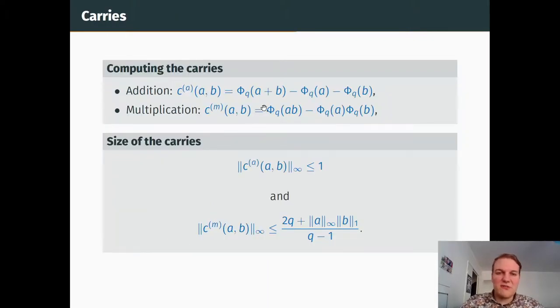Actually, the main difference between operations for polynomials and operations for integers with our way to view things is the presence or absence of carries. If we compute phi_q of a plus b minus phi_q of a plus phi_q of b, this is exactly the carries that happened in the schoolbook addition of a plus b in the basis q. The same thing goes for multiplication, and we are able to bound the size of the carries.